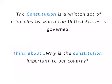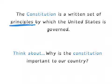The Constitution is a written set of principles by which the United States is governed. We're not talking about a school principal — principles ends with P-L-E-S, and principles are kind of like rules, expectations, or things we need to follow. Think about why the Constitution is important — it includes things like freedom of speech and freedom of the press. Why is having a set of rules or principles important to a country?